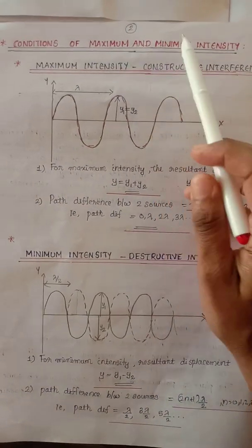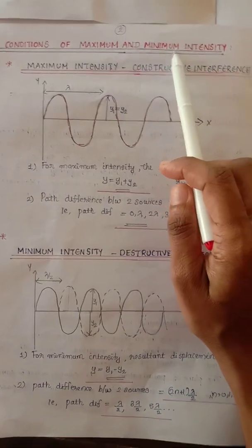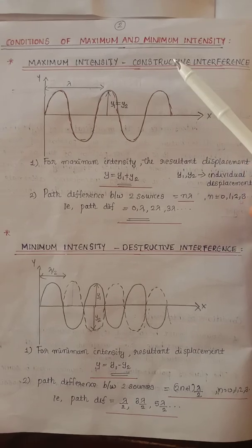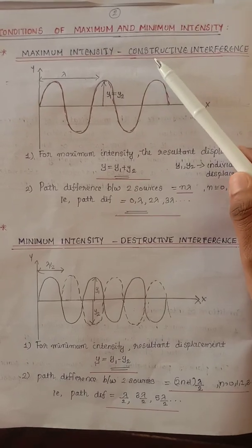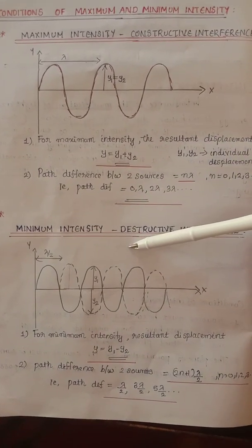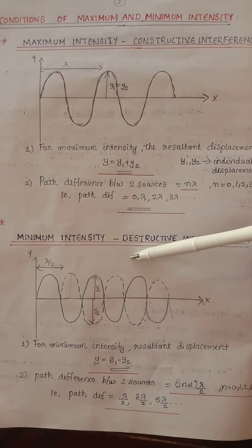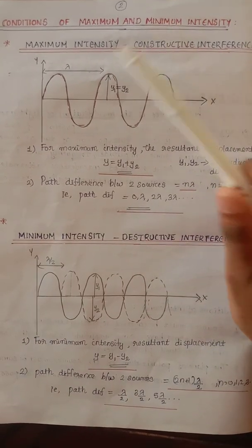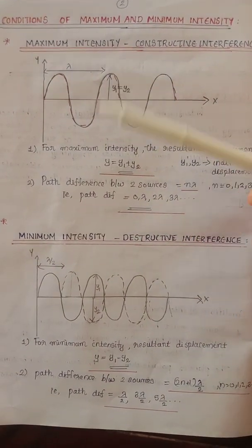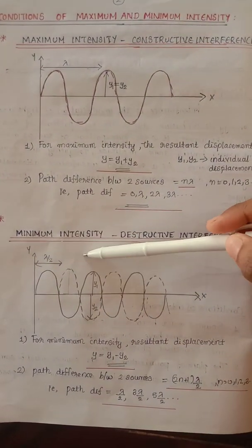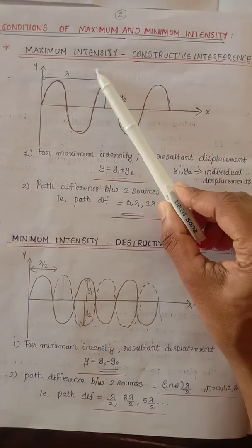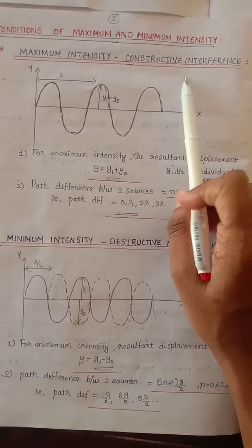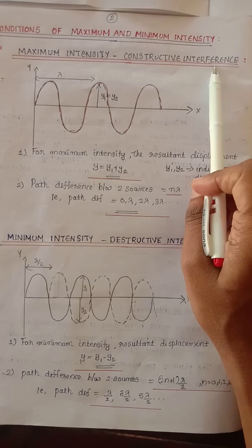Now, conditions of maximum and minimum intensity. Where maximum intensity is, as a result of interference, the region has maximum intensity. Where minimum intensity is, the region has minimum intensity. Maximum intensity is known as constructive interference.